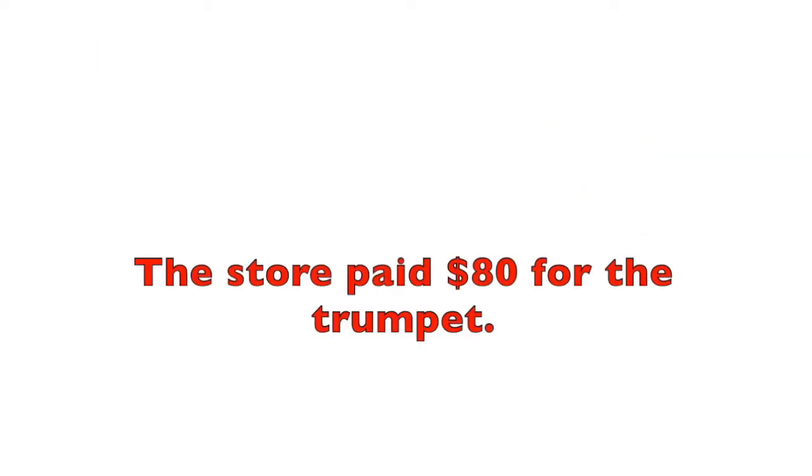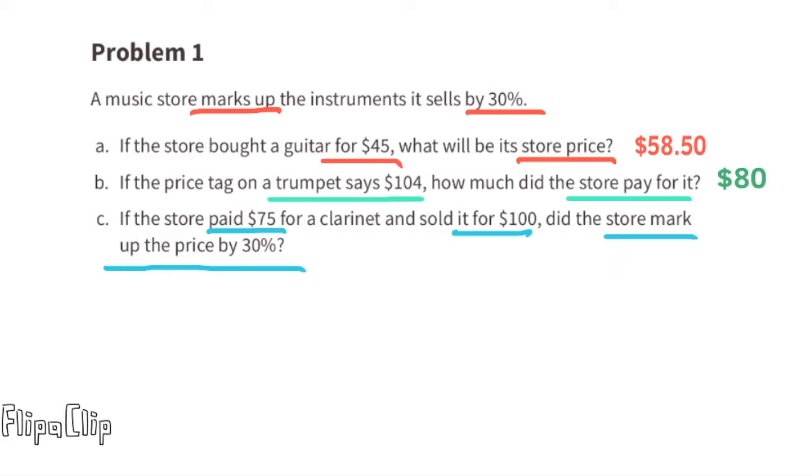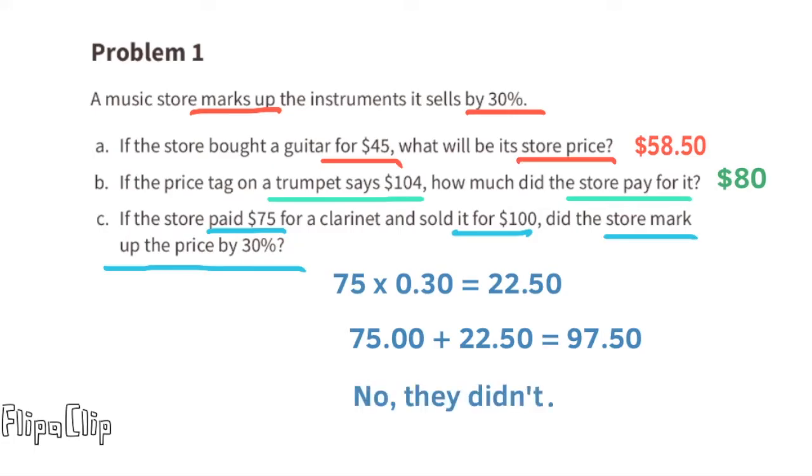Part c: If the store paid $75 for a clarinet and sold it for $100, did the store mark up the price by 30%? Let's find 30% of 75 and then add that to 75. 75 times 0.30 equals 22.50, so 30% of $75 is $22.50. 75 plus 22.50 only equals $97.50 - it doesn't equal $100. So no, the store didn't mark up the price by 30%. They must have marked it up more than 30%.